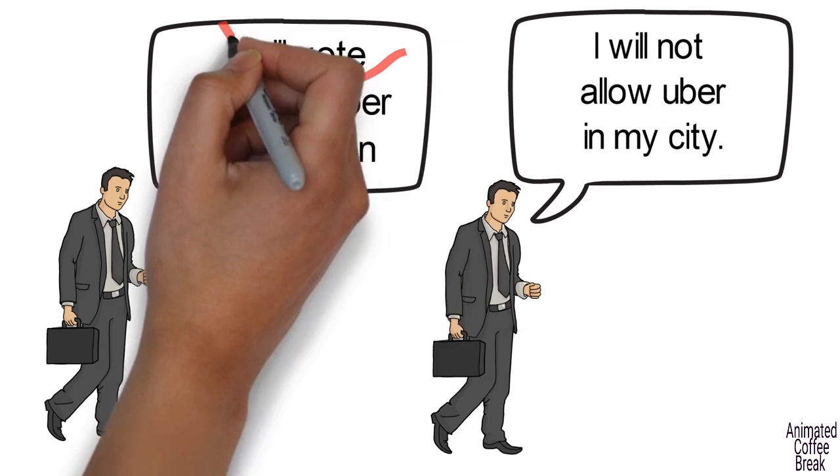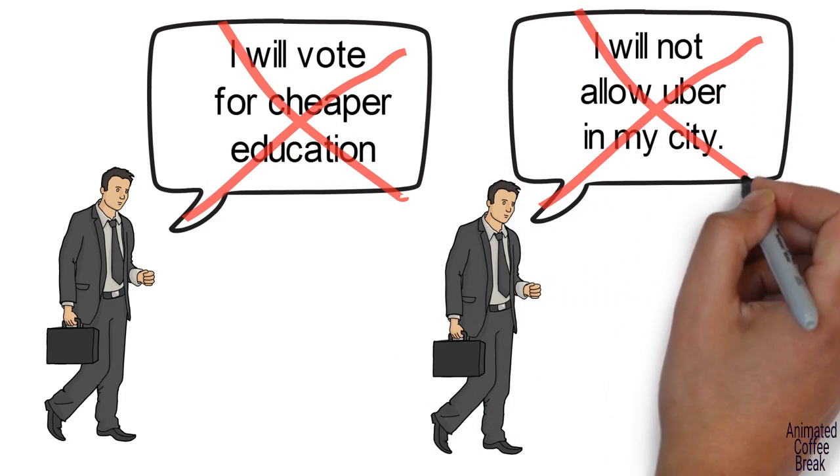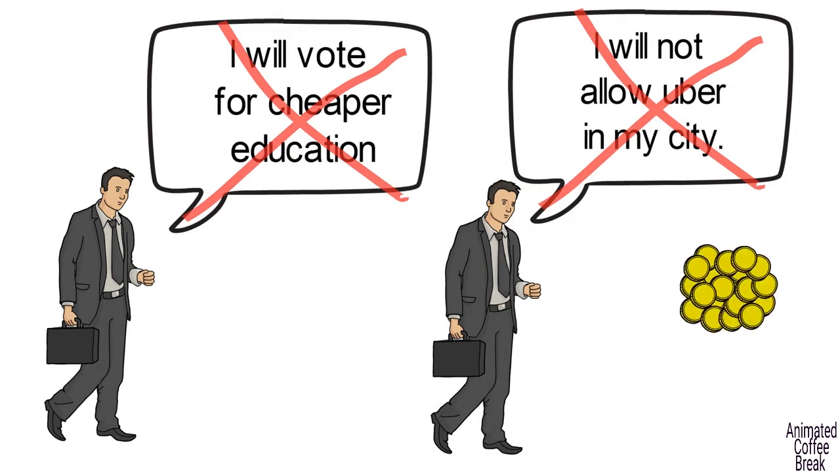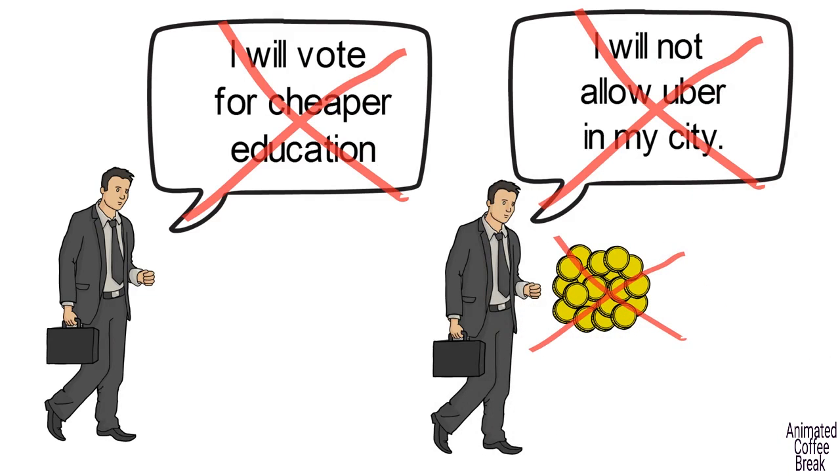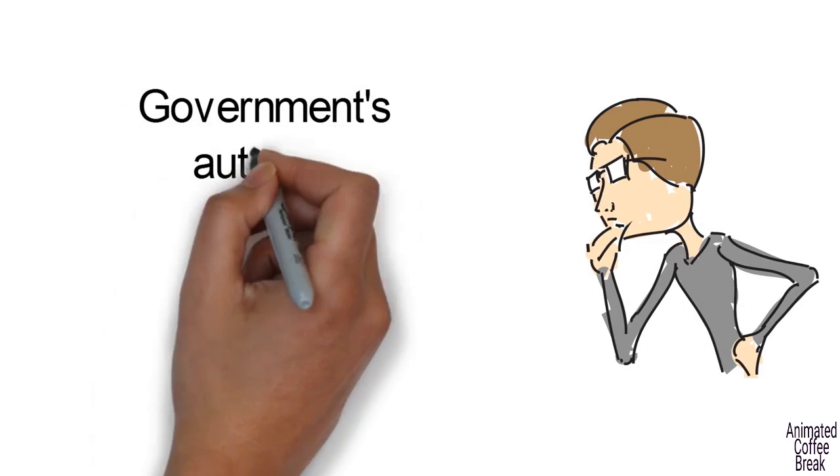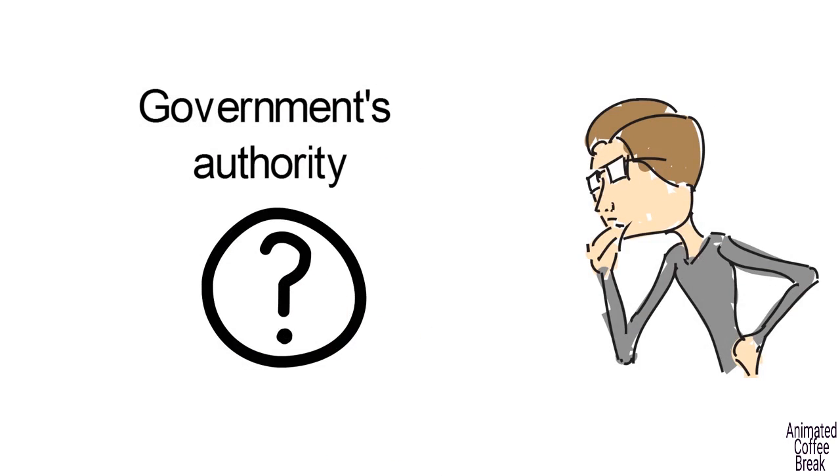The only way that democracy can actually work is if politicians will have no influence at all on the economy. That way, no one will try to bribe them to be on their side. What do you think should be under the government's authority, and what shouldn't?